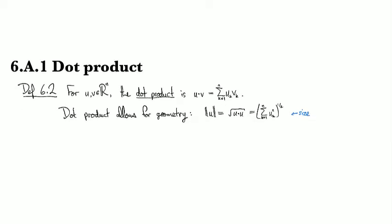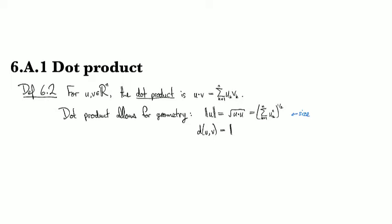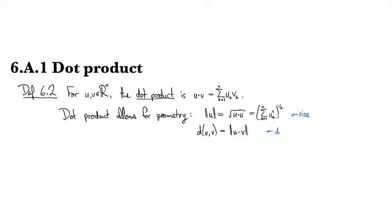Once you have a notion of size, then you can talk about distance. What is the distance between two vectors? We can define it as the magnitude or norm of the difference. So the size of the difference is the distance between. That gives us a notion of distance.